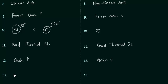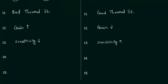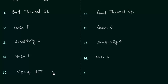The sensitivity of BJT is low compared to the sensitivity of JFET. The noise level of BJT is high compared to the noise level of JFET. The size of BJT is larger compared to the size of the junction field effect transistor.